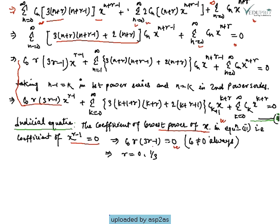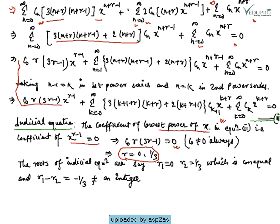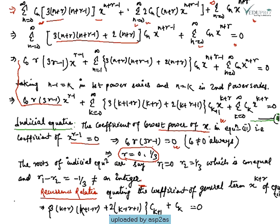Since c₀ cannot be zero, the indicial equation gives r = 0 and r = 1/3. So the indicial equation has two roots: r₁ = 0 and r₂ = 1/3. We can see the roots are unequal; r₁ - r₂ is not an integral value, confirming we are in case one.